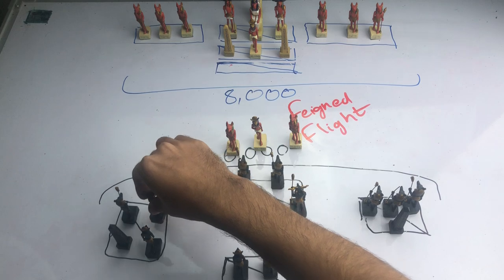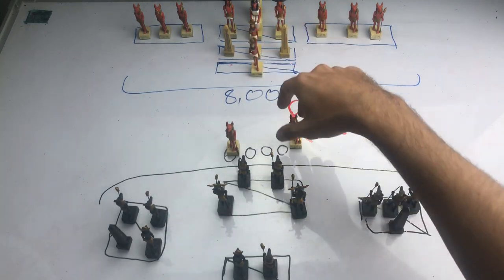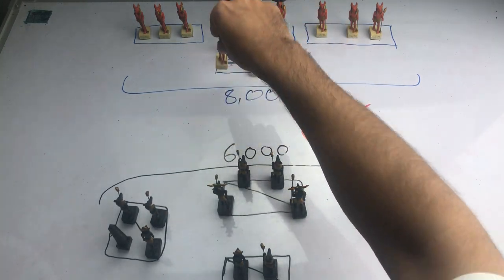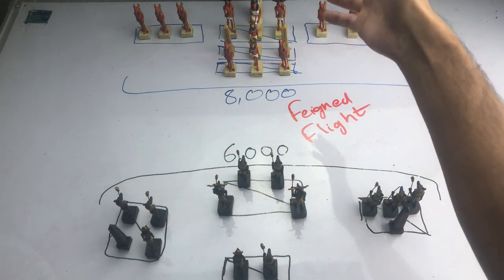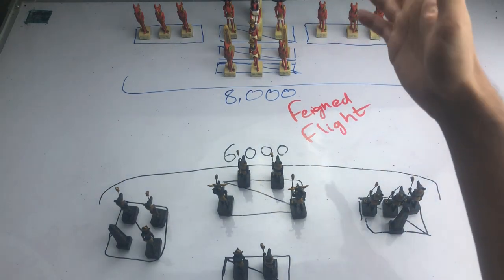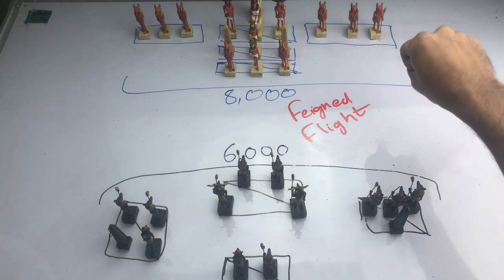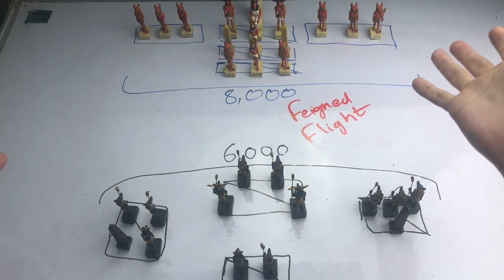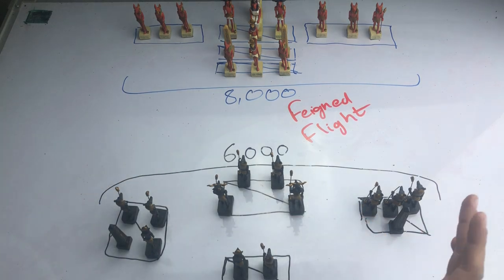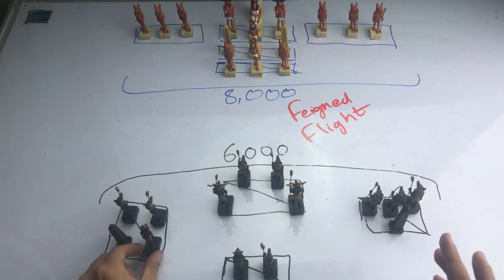The reason this feigned flight worked so well is it played on the battlefield expectations of the European knight and the European cavalry. You see, what they were so good at was giving chase during battles and slaughtering the enemy whilst they ran. That's what they were experts at and that's what the Mongols played on at this battle so well.